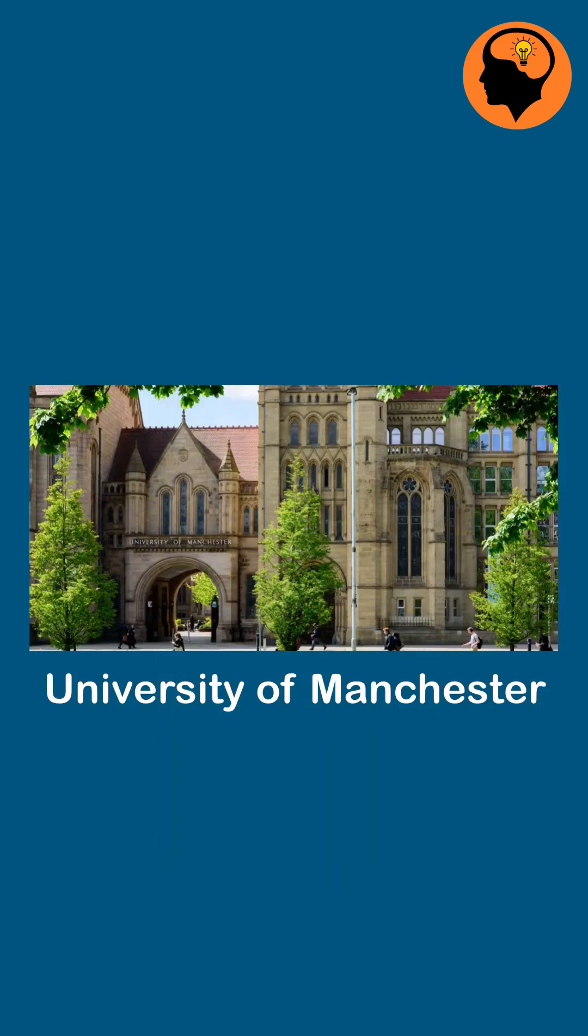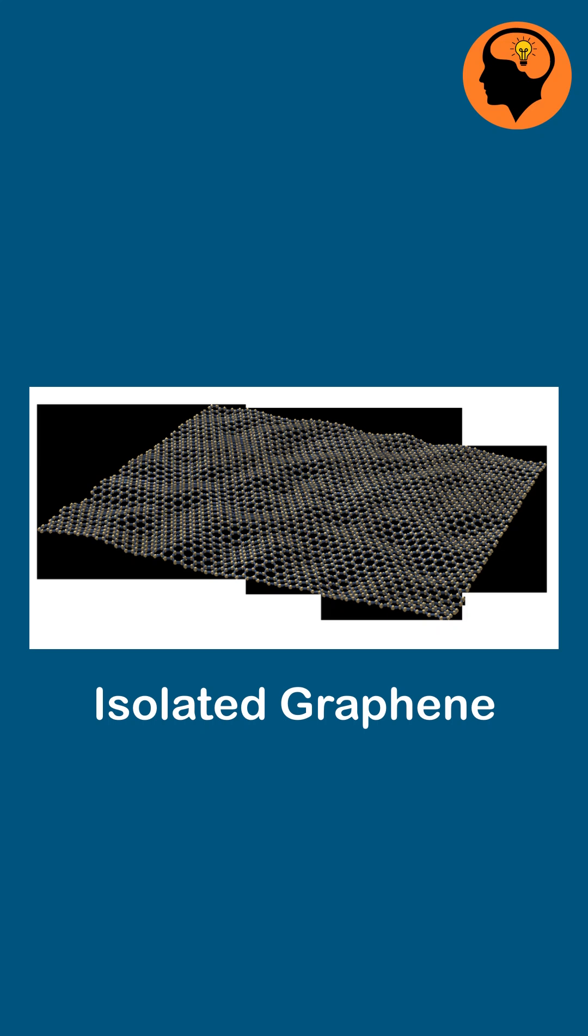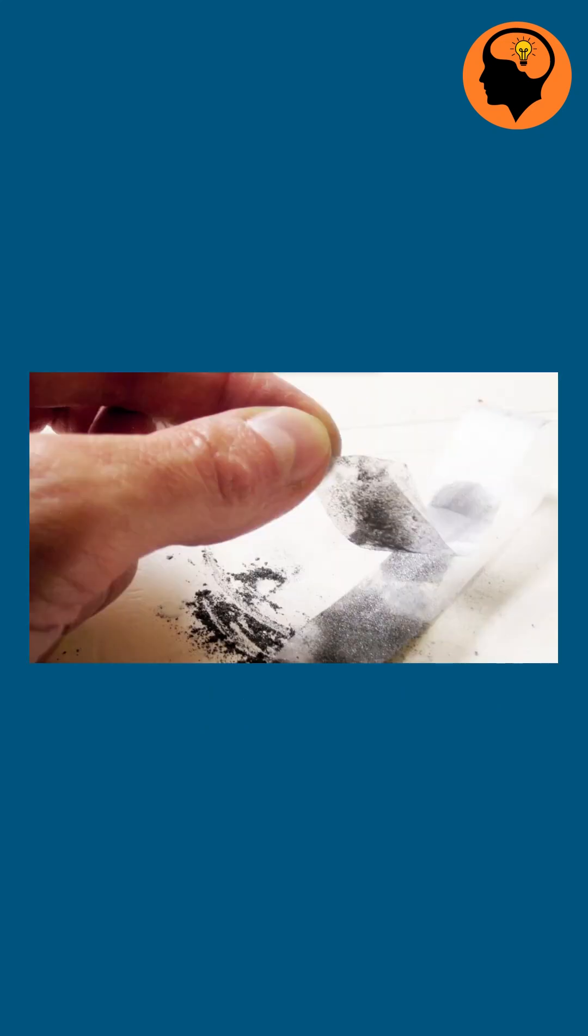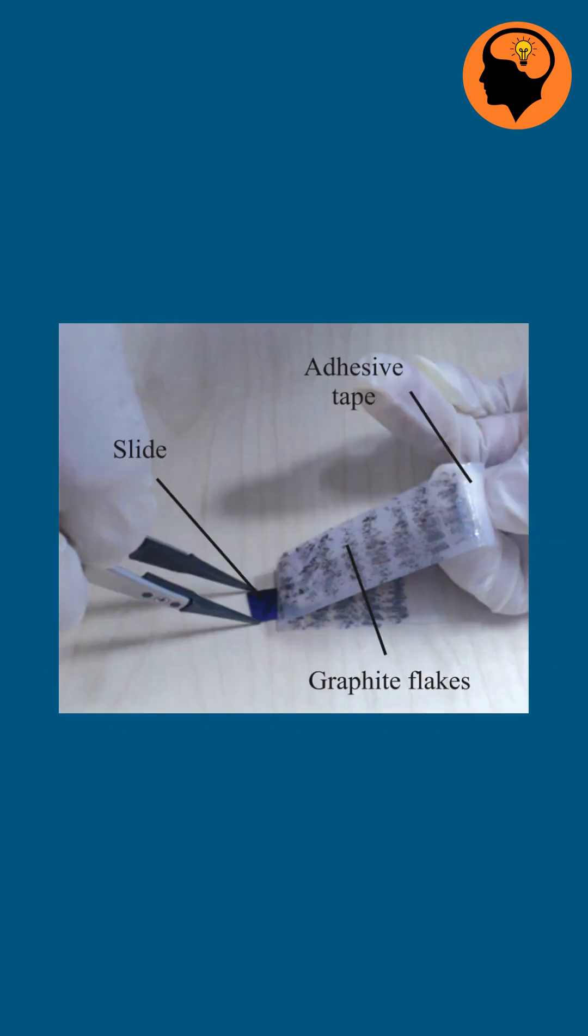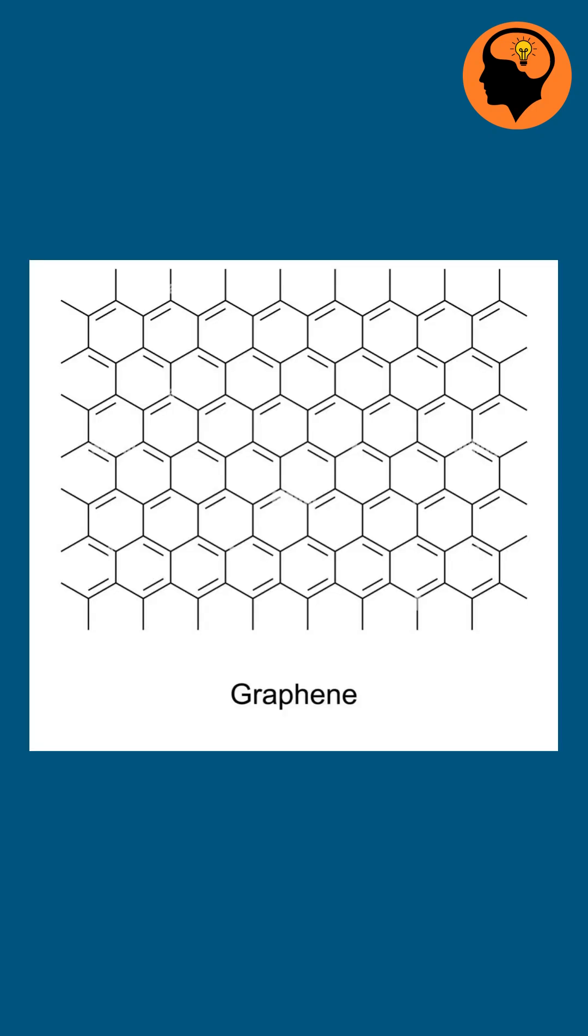In 2004, Andrei Geim and Konstantin Novoselov, two researchers at the University of Manchester, successfully isolated graphene for the first time. They used a simple yet ingenious method called the scotch tape method. By peeling layers of graphite with adhesive tape, they managed to isolate a single layer of carbon atoms.